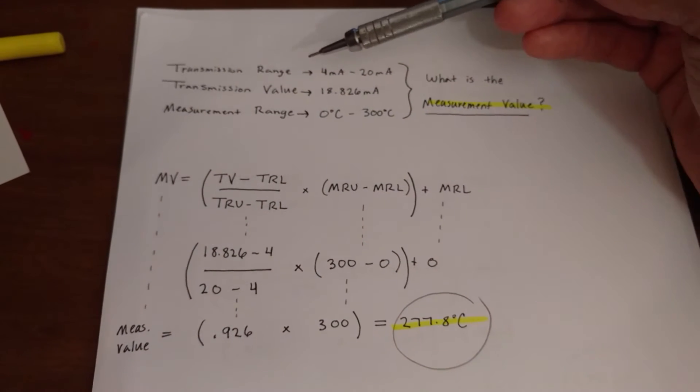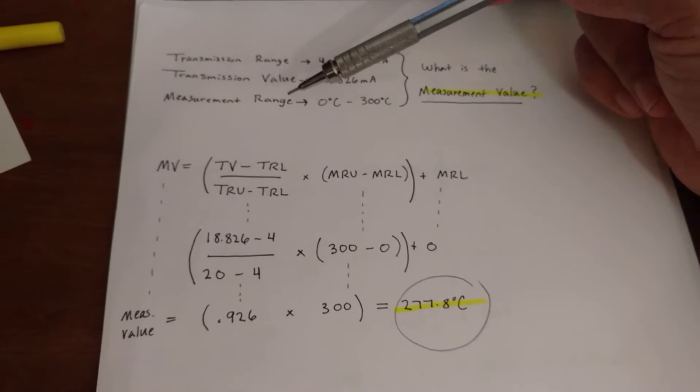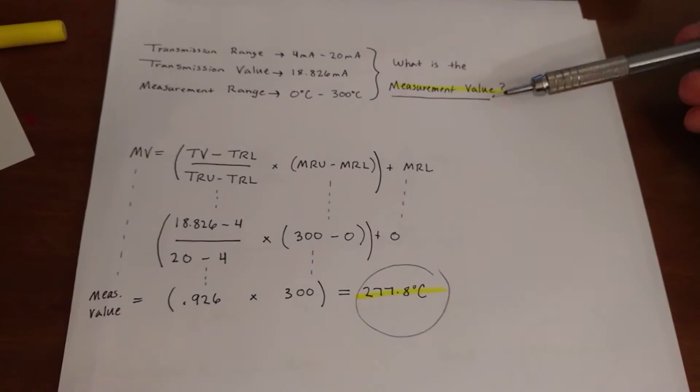Alright, so you're given a problem. You're given your transmission range, your transmission value, and your measurement range. And you want to find your measurement value. So what do you do?